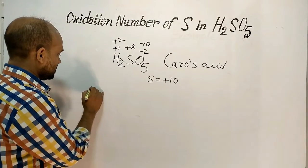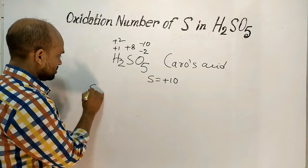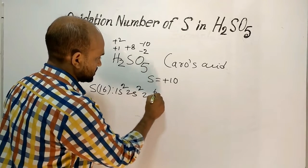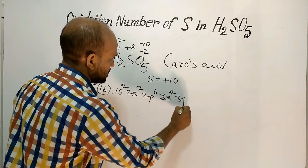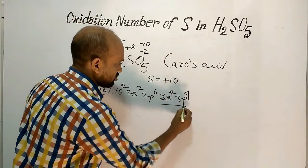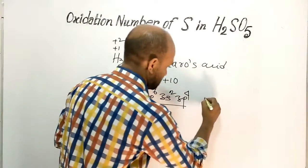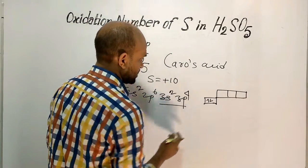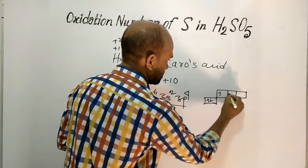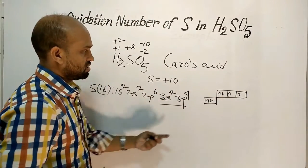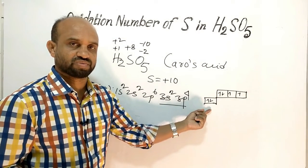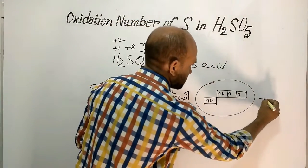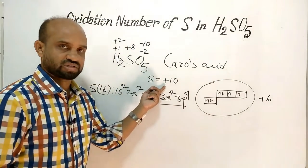From the electronic configuration, sulfur (atomic number 16) has configuration 1s², 2s², 2p⁶, 3s², 3p⁴. The outermost shell has 2 electrons in the s orbital and 4 electrons in the p orbital, giving a total of 6 electrons. So sulfur's oxidation number cannot exceed plus 6, and therefore plus 10 is impossible.